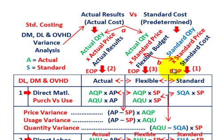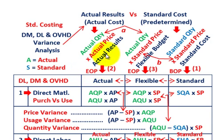You develop your standard costing when you develop your product or at the beginning of the period. When you look at your actual results at the end of or during the period, you compare them to your standard amounts. Your actual results would be the actual quantity used for labor, material, and overhead on a unit basis times some actual price — actual quantity times actual price equals our actual results.